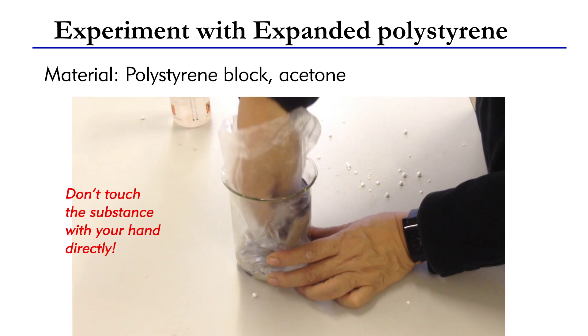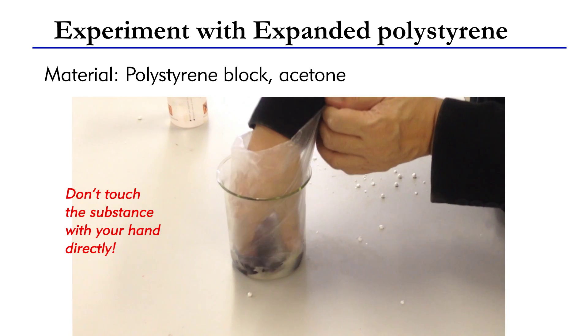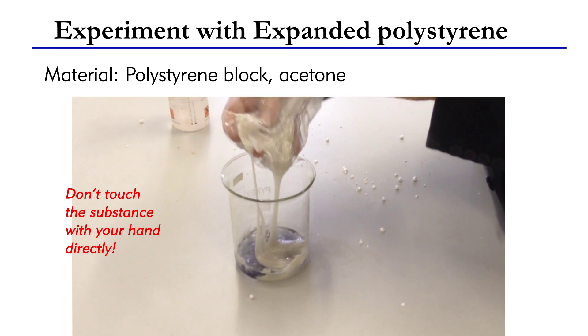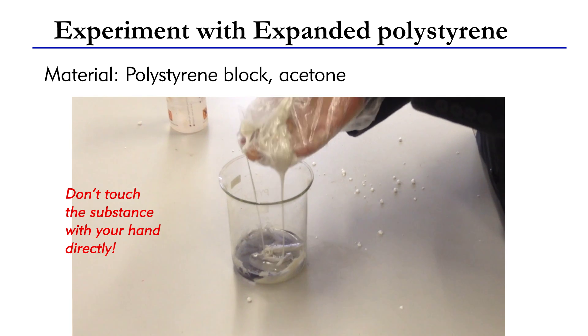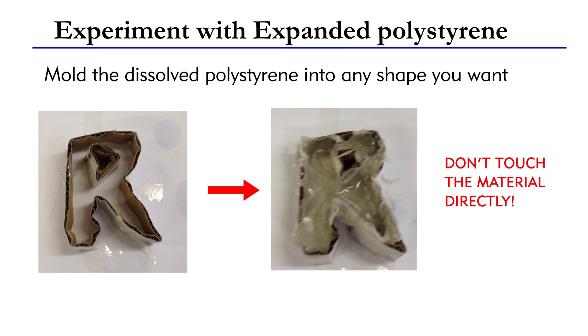The remaining substance is quite sticky, but when the acetone inside vaporizes, it will be hardened. Therefore, this can be a good substance for you to mold into any shape you want.